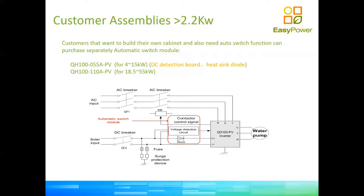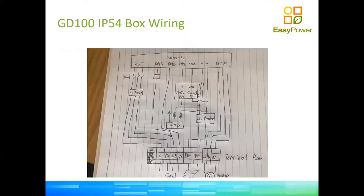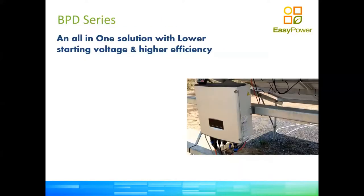This is the same setup shown as a single-line diagram. The detection board for switching between solar and grid comes in two models depending on pump inverter size: the most common is the QH100-055K, and there is a bigger version for inverters from 18 kilowatts upward. The GD100 is highly customizable: you decide whether to include the PV booster, the auto switch, or have everything wired together in an IP54 enclosure.